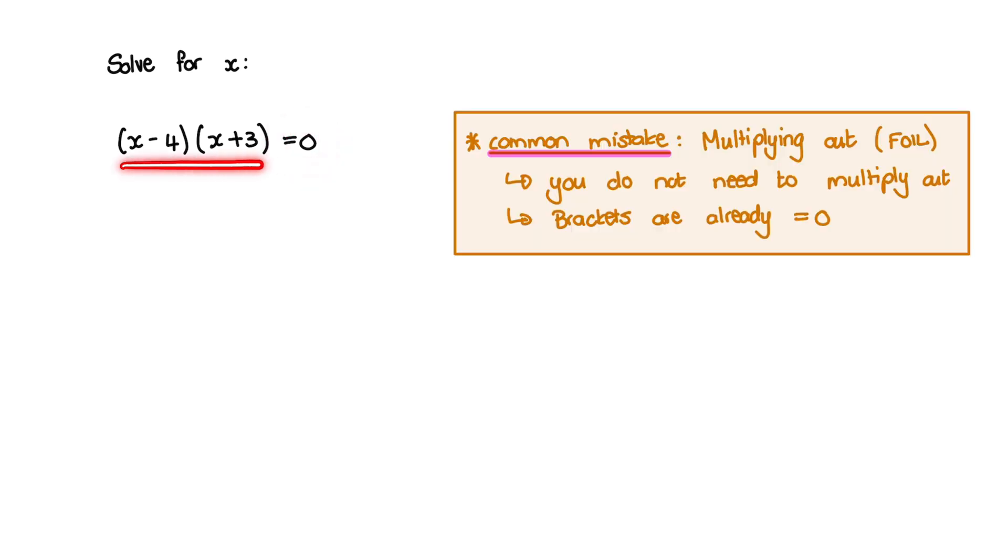One of the most common mistakes that learners make is that they multiply out these brackets when they need to solve for x.